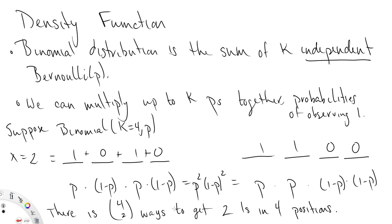So what we need to recognize is, for the binomial observation x equals 2, there is, in fact, 4 choose 2 ways to get 2 1's in 4 positions. That is, k equal to 4. There is 4 choose 2 ways to observe x equals 2, each of which has the same probability, p to the second times 1 minus p to the second. This is going to be the start to our intuition for the density function for the binomial.